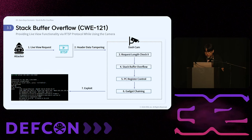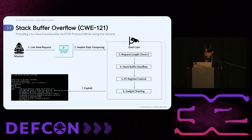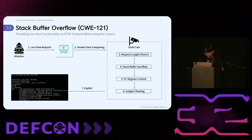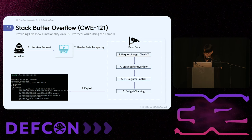The live view feature provided through the RTSP protocol is associated with stack buffer overflow vulnerabilities. An attacker crafts an RTSP request for live view and hooks the app library to modify the RTSP header data. If the dashcam does not properly check the request length when receiving data, a stack buffer overflow can occur, potentially altering the PC register. By gathering gadgets for the buffer overflow attack and performing gadget chaining, the attacker can exploit this vulnerability to gain a shell.